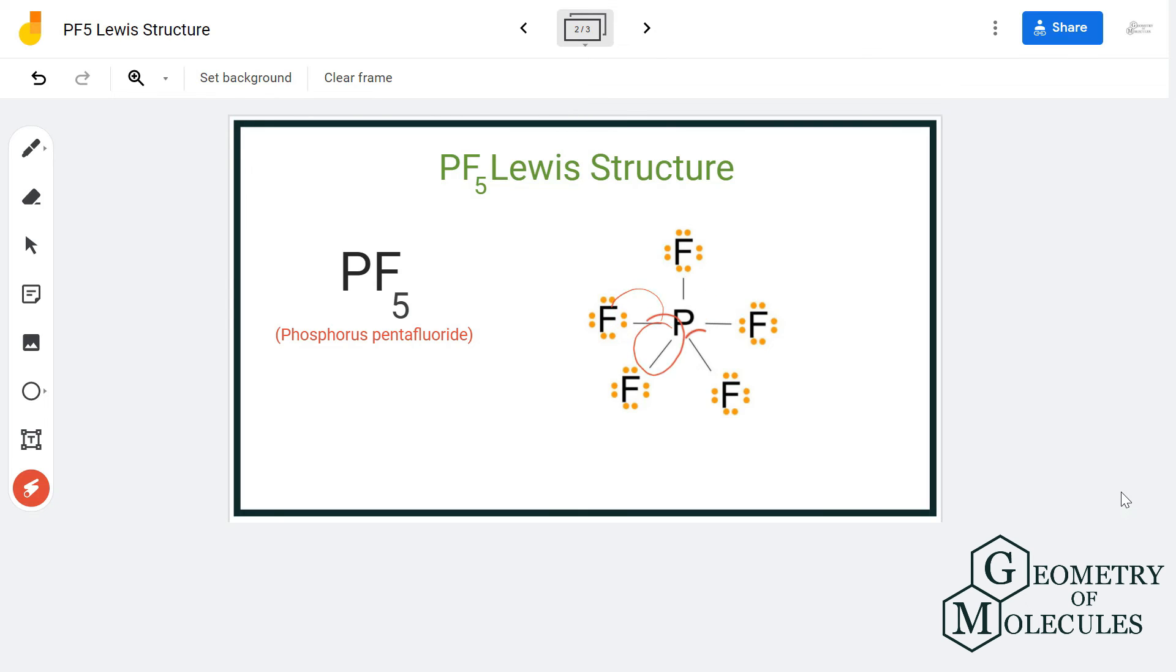Phosphorus atom has more than eight valence electrons in its outer shell because it has an exception to the octet rule in which it can accommodate more than eight valence electrons. So this is the Lewis structure for PF5.